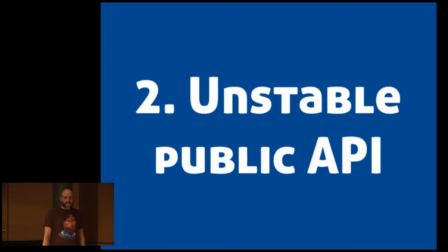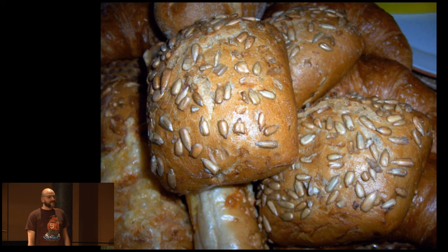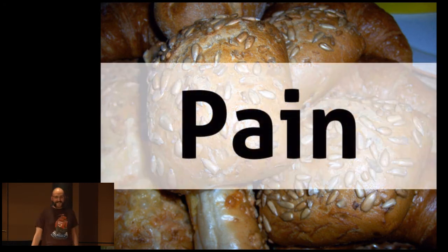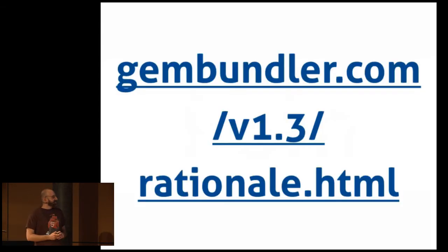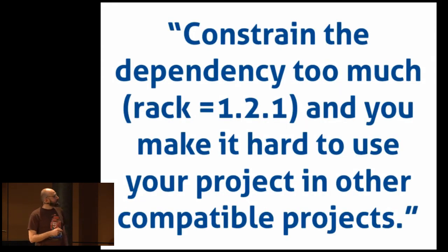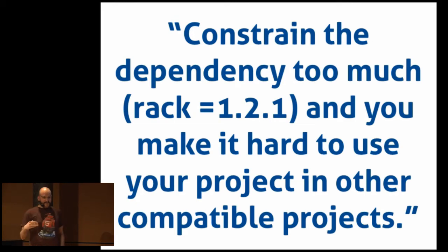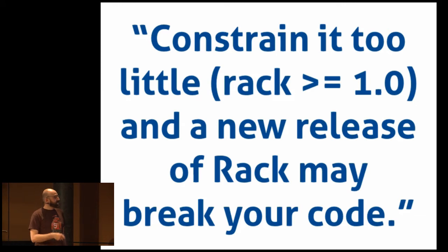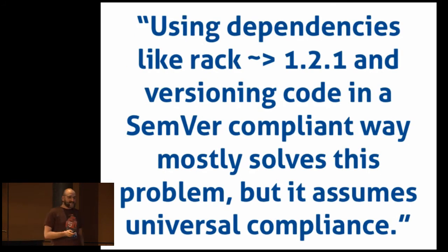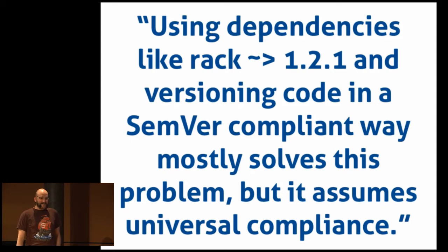Another problem you can run into is unstable public APIs. It's a problem that's well described on Bundler's website. If you use specific versions you can't be compatible — you can't install different gems because they'd conflict. If you constrain too little, that's the problem we had with Chef: a new release breaks because the API changed. If you expect things to work and only change the minor version when the API changes, it would work. But most of the time people by mistake change the API using only a patch version, and that's what happens all the time.